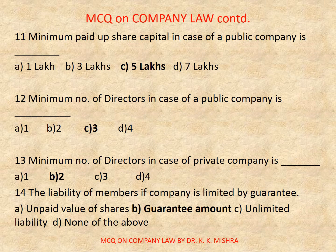Question number 11: Minimum paid-up share capital in case of a public company is — Options are: A) 1 lakh, B) 3 lakhs, C) 5 lakhs, D) 7 lakhs. Correct option is C, 5 lakhs. Question number 12: Minimum number of directors in case of a public company is — Options are: A) 1, B) 2, C) 3, D) 4. Correct option is C, 3.